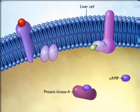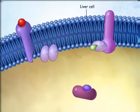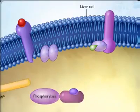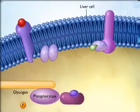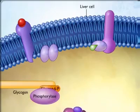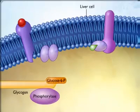Protein kinase A is an enzyme that adds phosphate groups to specific cellular proteins. In liver cells, protein kinase A phosphorylates and thereby activates another enzyme called phosphorylase, which converts glycogen into glucose 6-phosphate. The glucose 6-phosphate is then converted to glucose.